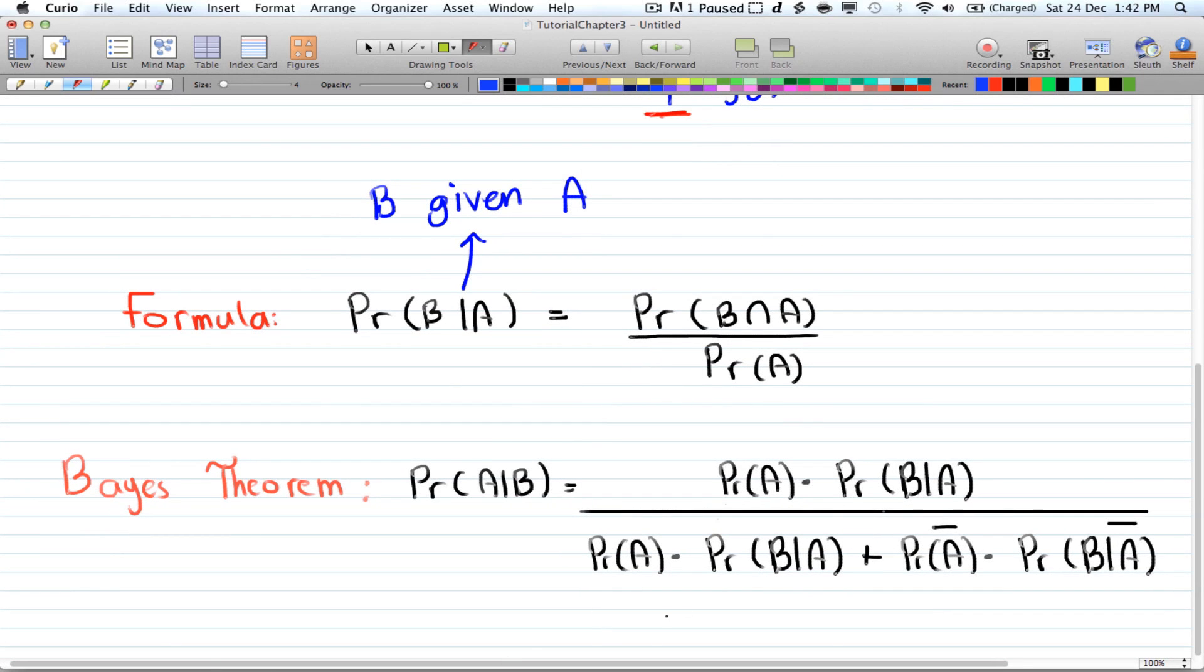And this is Bayes' theorem. It states that the probability of A given B is equal to the probability of A times the probability of B given A, divided by, notice that these two are the same. So divided by the same expression plus the probability of A' times the probability of B given A'. So all that changed from here to here is where here we're dealing with A'.